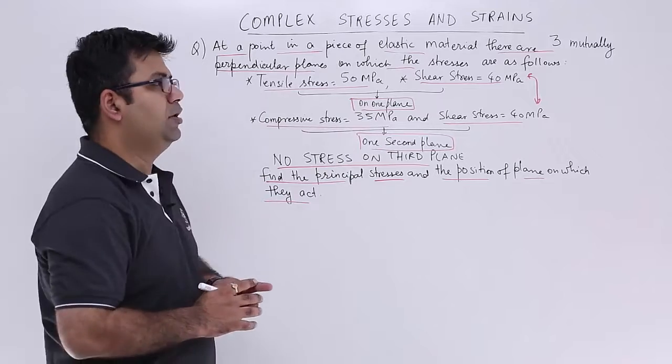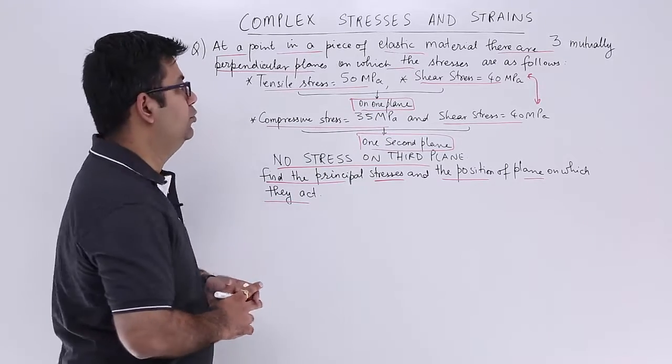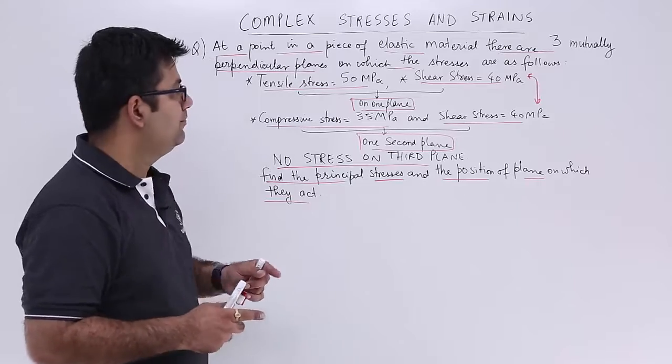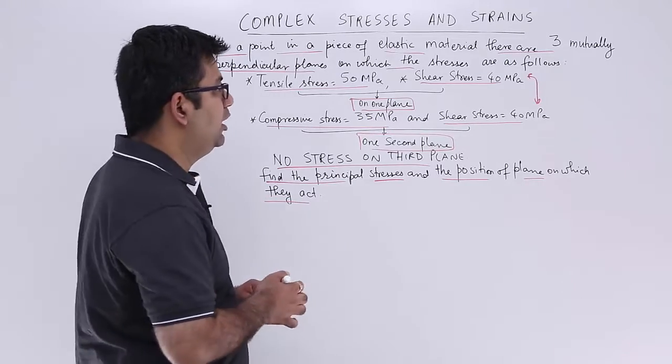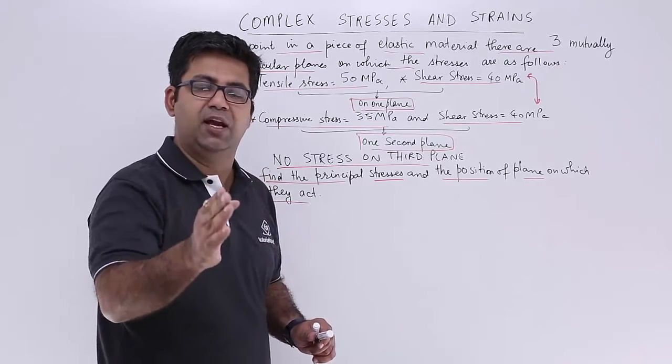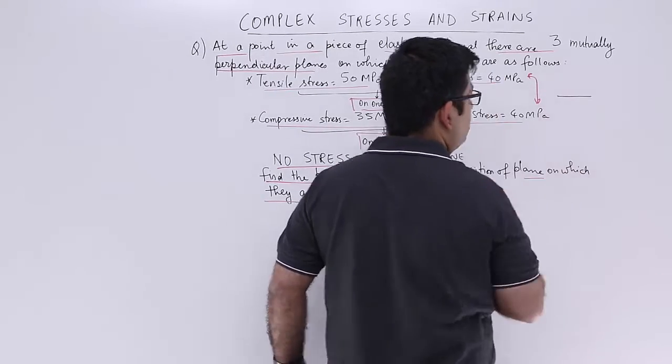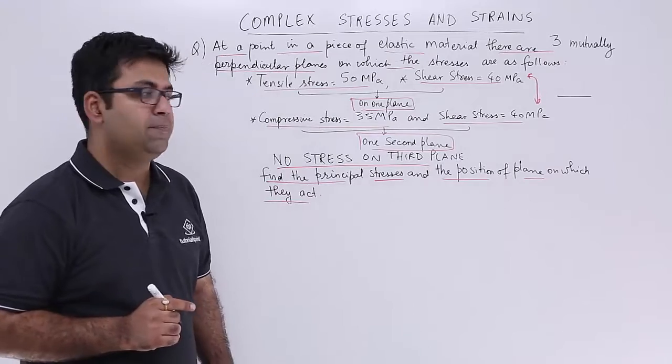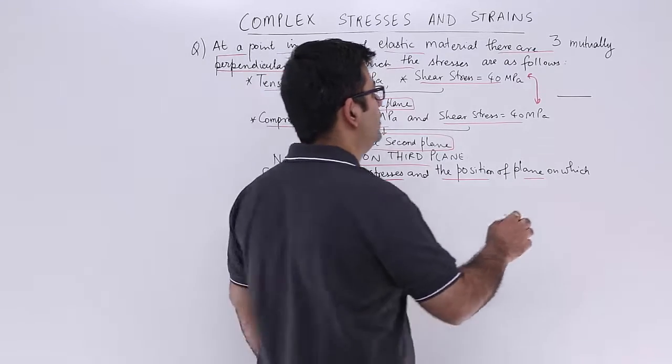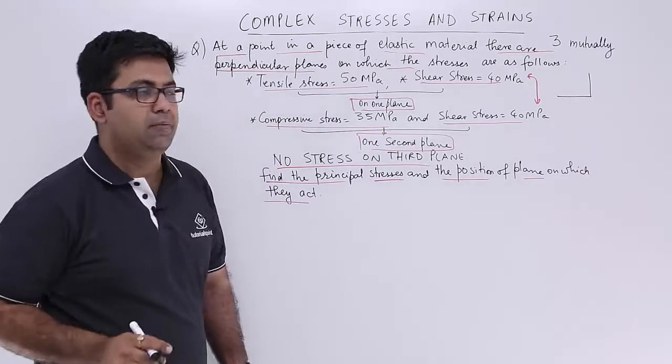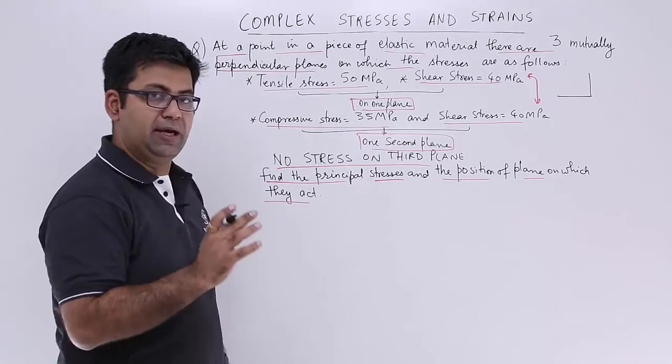That's a straightforward question on the application of Mohr circle. So we will draw one by one. We know that the normal stress, whether tensile or compressive, is drawn as a horizontal line in Mohr circle and the shear stress is given as a vertical line. Just remember this. So let's start.